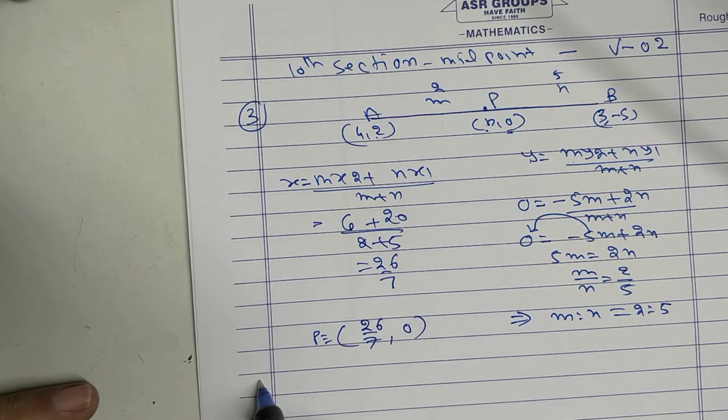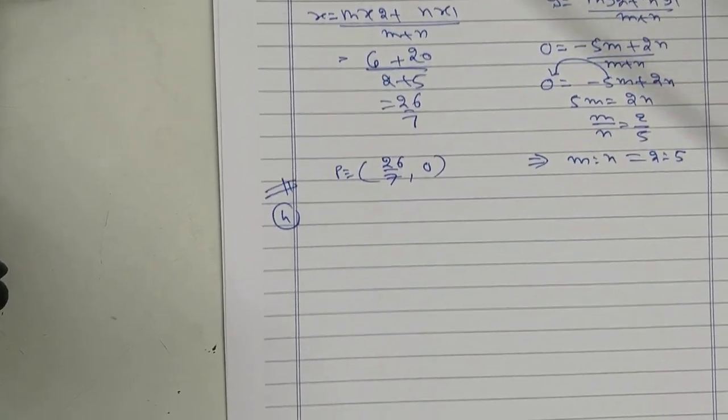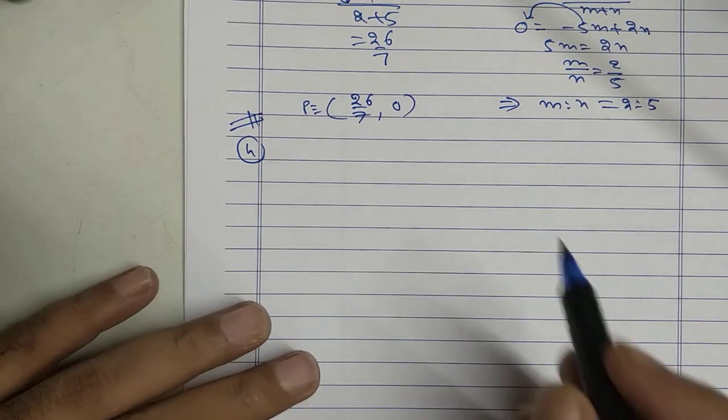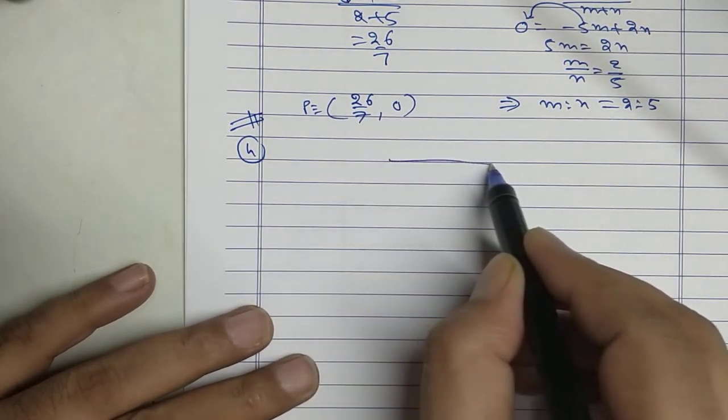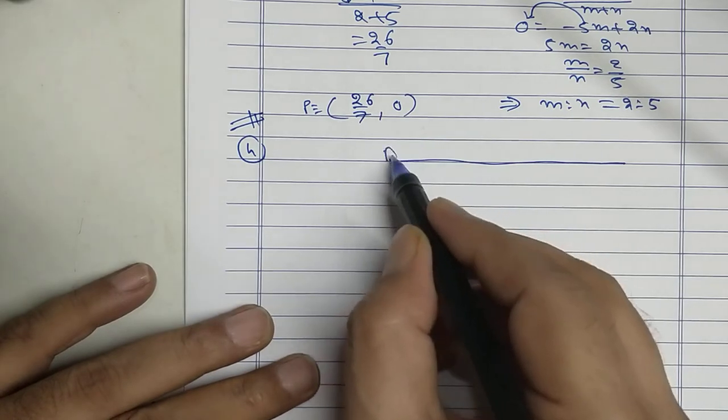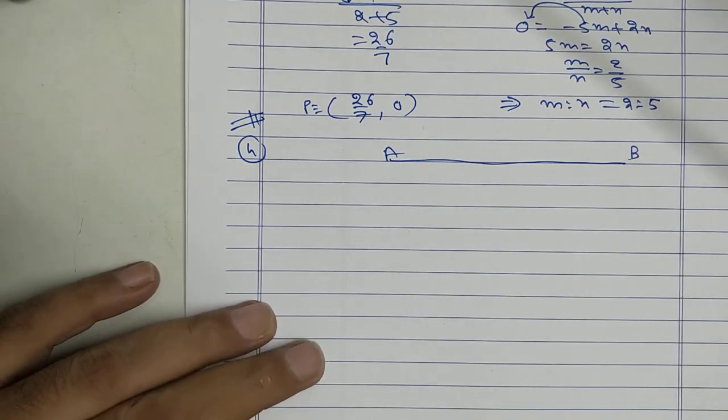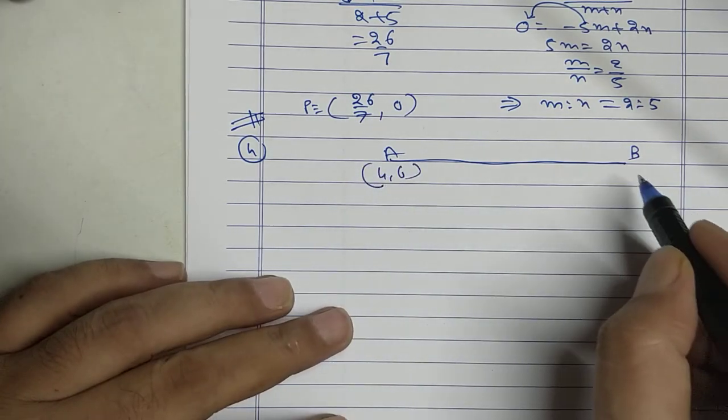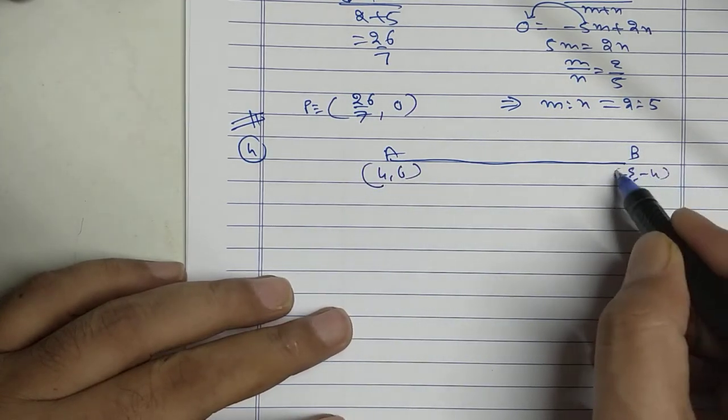Sum number 4. Please be careful. It's a little one point important. Hope you don't make mistake in examination. A, B. 4 and 6. Minus 5 and minus 4.